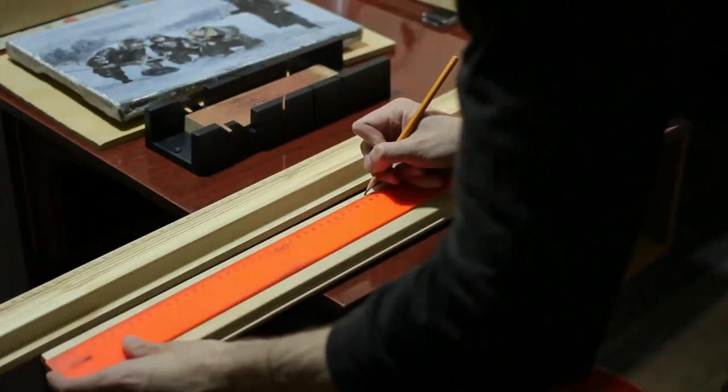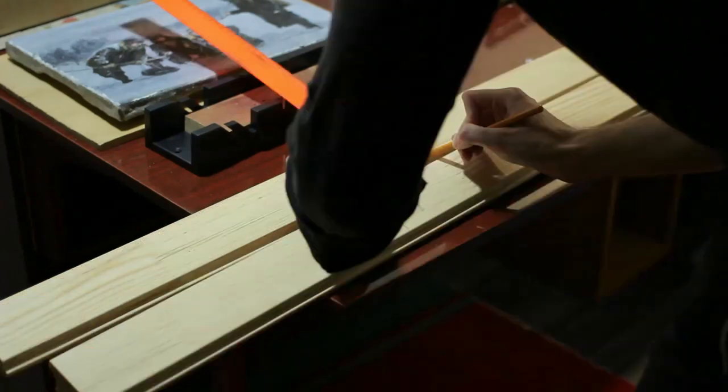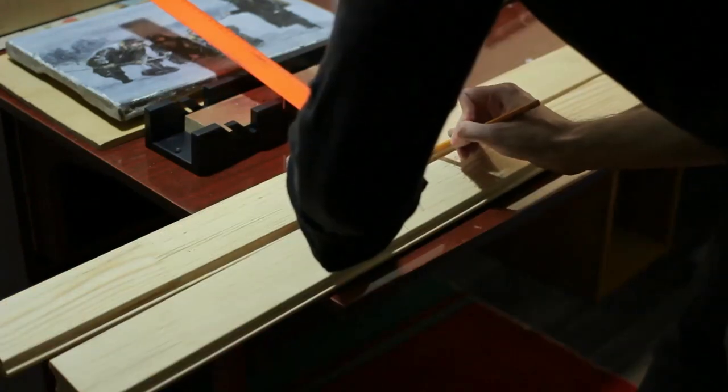First, we mark on the profile the values of the sides of the picture, plus the width of the profile, minus the width of the small ledge behind which the frame will hide.